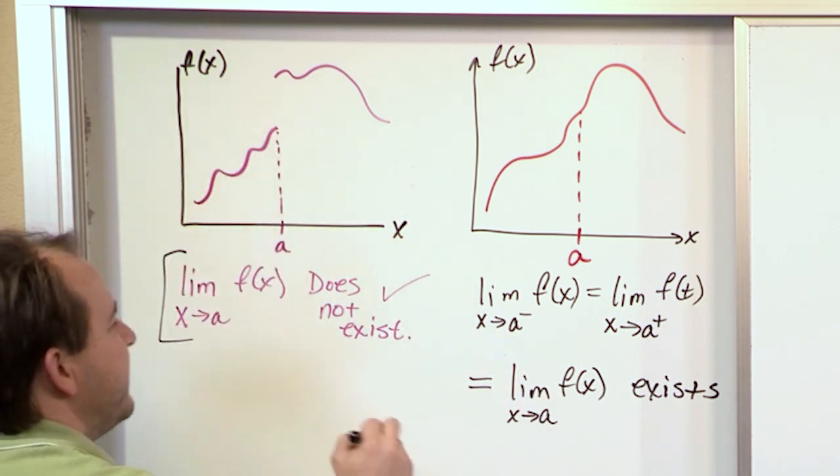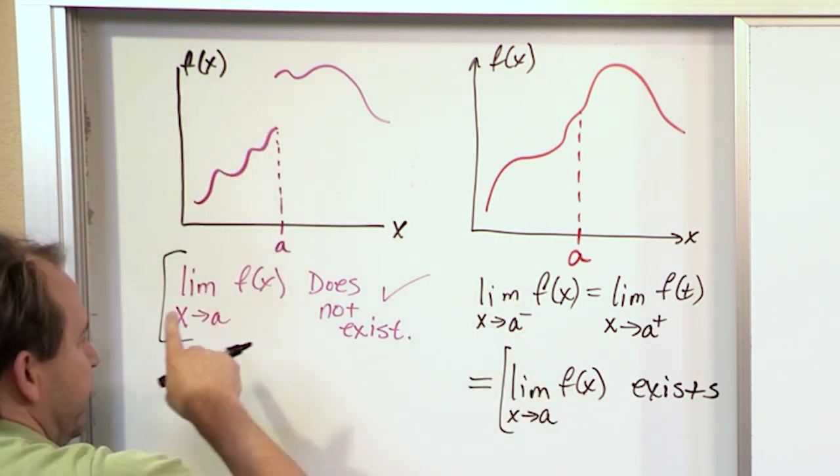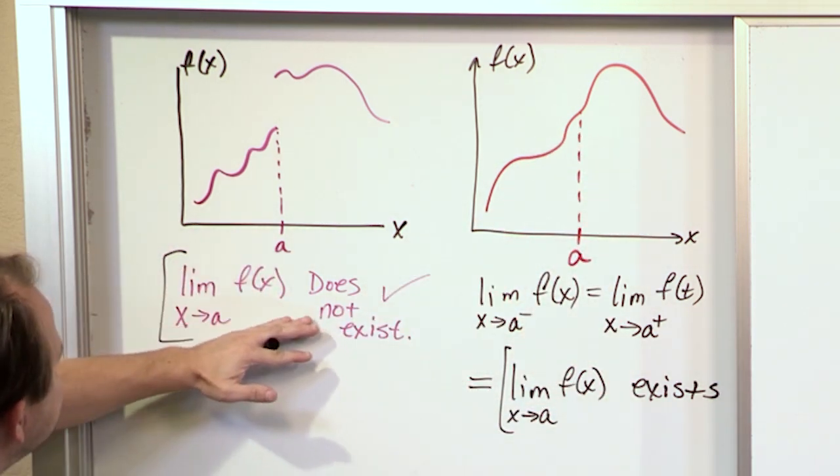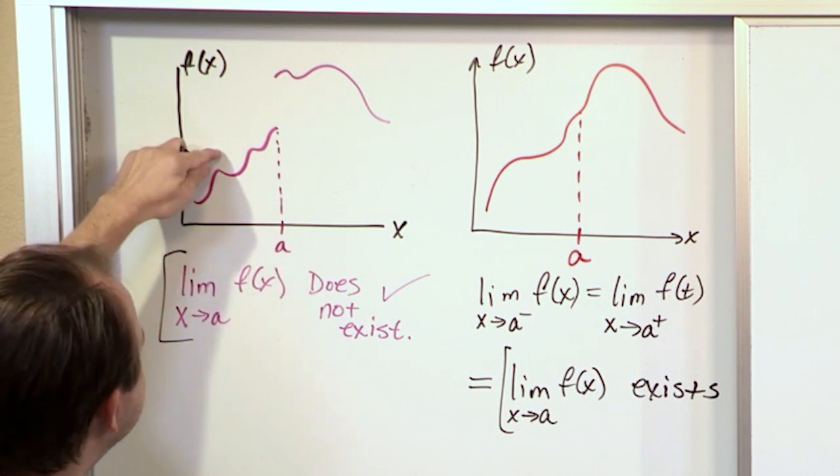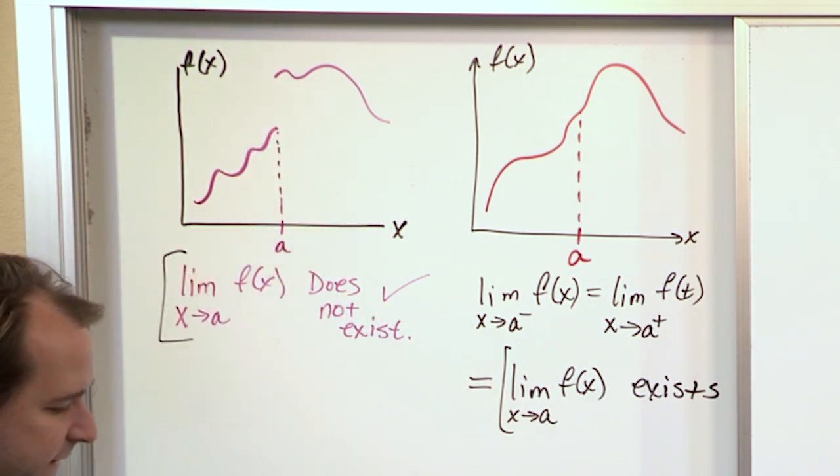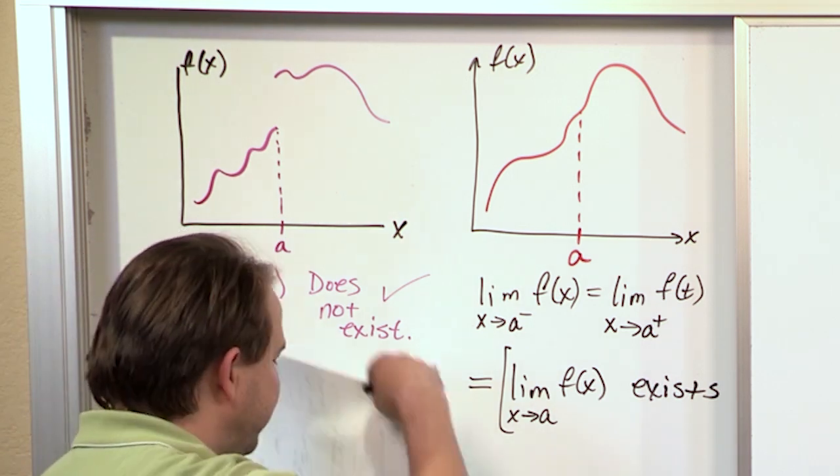So in one case, we have a limit that doesn't exist, or the two-sided limit does not exist. And this two-sided limit doesn't exist here. Now, when I say the limit doesn't exist, I mean the two-sided limit. Of course, the left-hand limit exists, and the right-hand limit exists. But put together, these guys do not exist as a two-sided limit here.